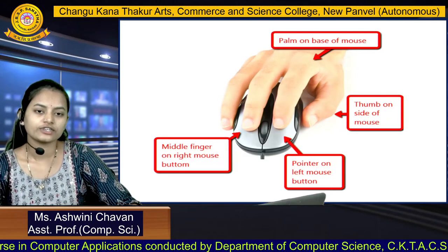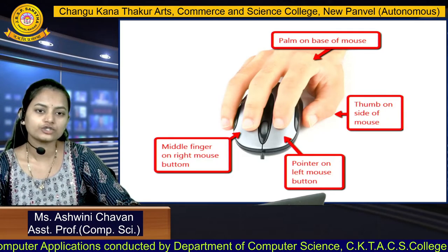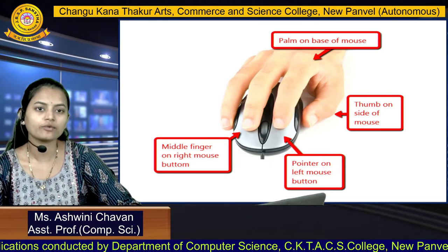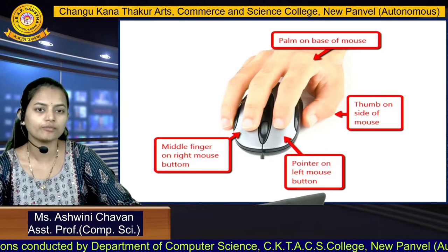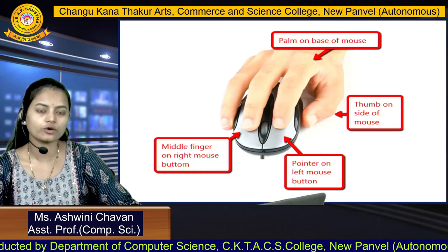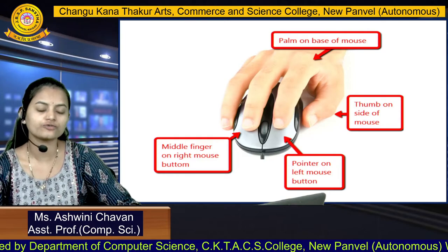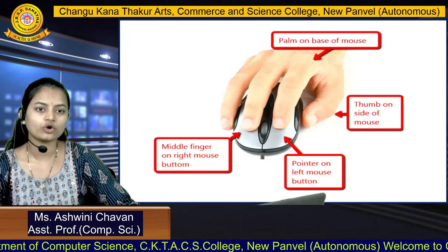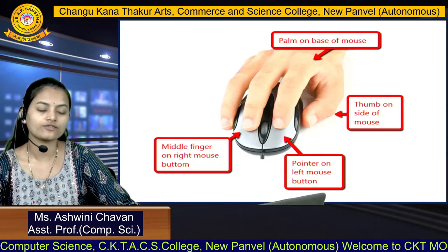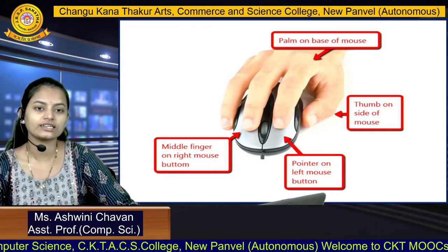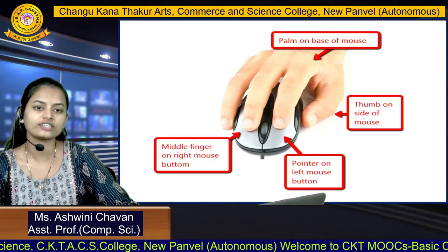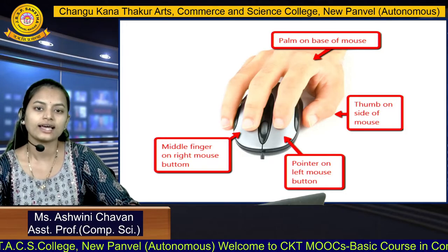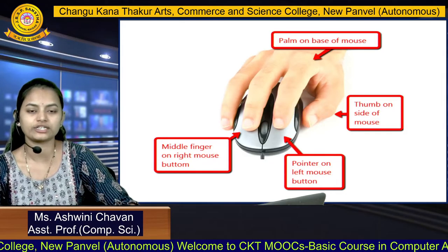In this figure, we can see the position of the hand with the mouse. The palm rests on the base of the mouse. The thumb is on the side of the mouse, the index finger is on the left button, and the middle finger is on the right mouse button.